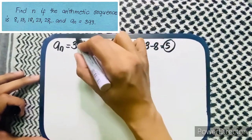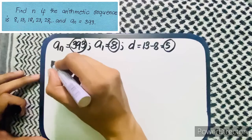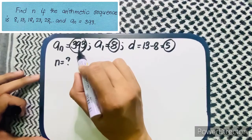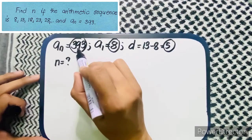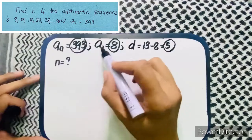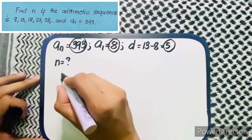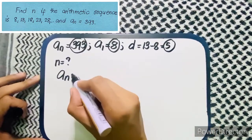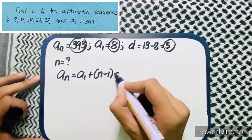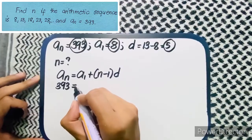So we have the difference which is 5, a sub 1 which is 8, and a sub n is equal to 393. We need to find n — n means the position of 393, that nth term. Using these three values, we substitute into the formula: a sub n equals a sub 1 plus n minus 1 multiplied by d.